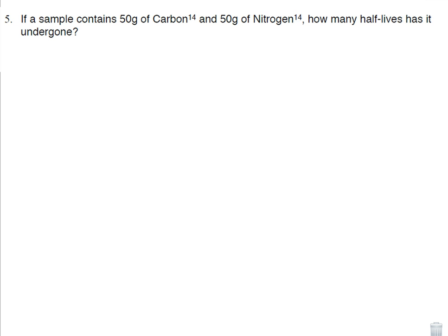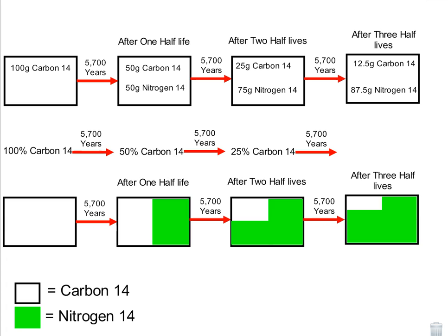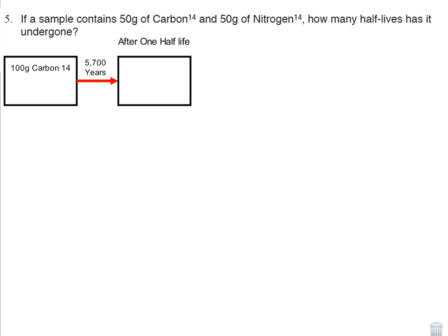If a sample contains 50 grams of carbon-14 and 50 grams of nitrogen-14, how many lives has it undergone? Well, again, matter cannot be created or destroyed, so we know our starting product was 100 grams. It had to be. So we could go back to this idea that we just did. And we could kind of work through it by saying, we started with 100 grams of carbon-14. After one half-life, I'd have 50 grams of carbon-14, 50 grams of nitrogen-14. I could stop right there. How many half-lives? That's right, just one.